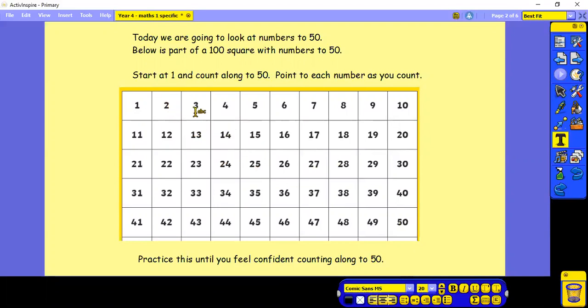So let's have a try now. 1, 2, 3, 4, 5, 6, 7, 8, 9, 10, 11, 12, 13, 14, 15, 16, 17, 18, 19, 20, 21, 22, 23, 24, 25, 26, 27, 28, 29, 30, 31, 32, 33, 34, 35, 36, 37, 38, 39, 40, 41, 42, 43, 44, 45, 46, 47, 48, 49, 50.